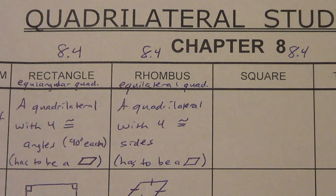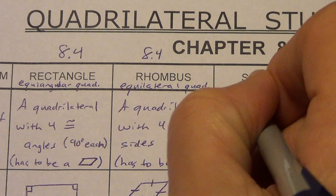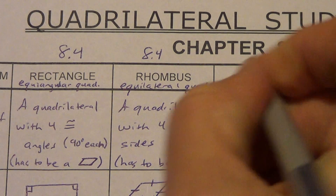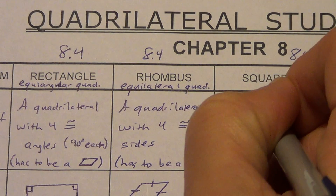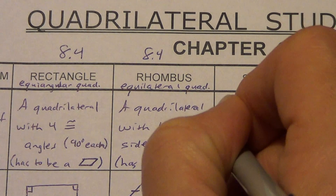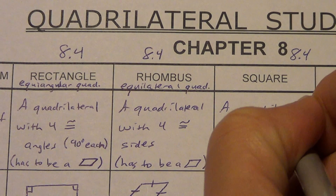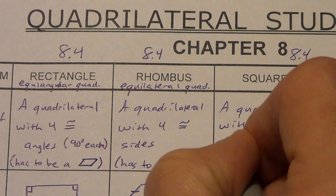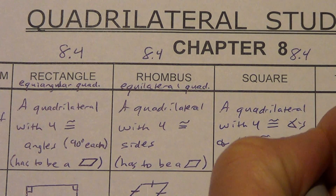So what in the world is a square? Let's go ahead and define it: a quadrilateral with four congruent angles and four congruent sides. Now, it has to be a parallelogram. We can talk about why using some of our previous theorems.